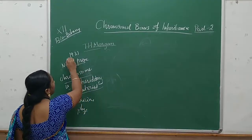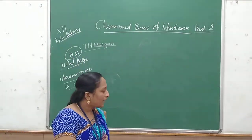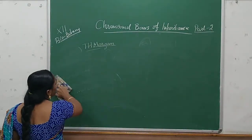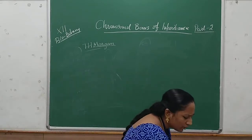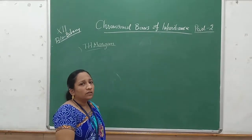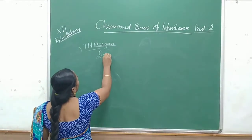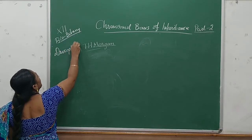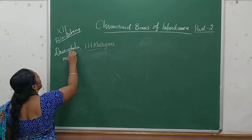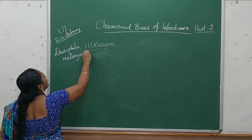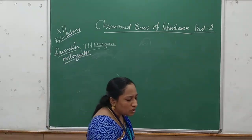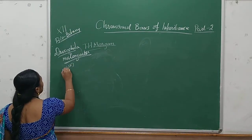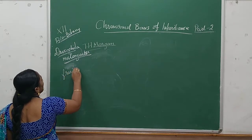He got the Nobel Prize in the year 1933. Now let us learn what is the evidence given by T.H. Morgan. What species did he use? Drosophila — Drosophila melanogaster — otherwise said to be the fruit fly.